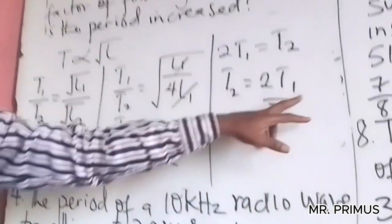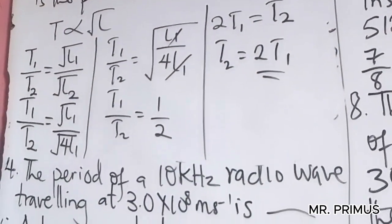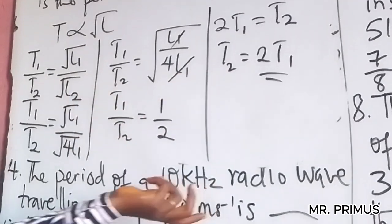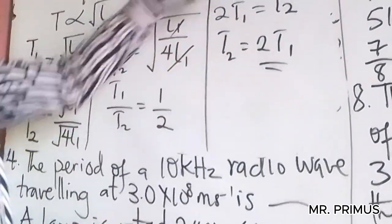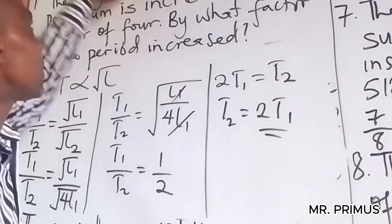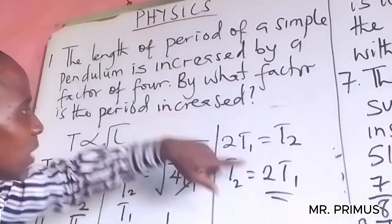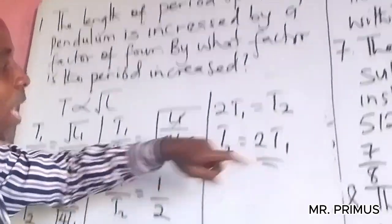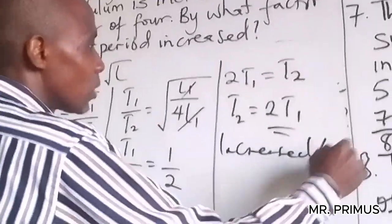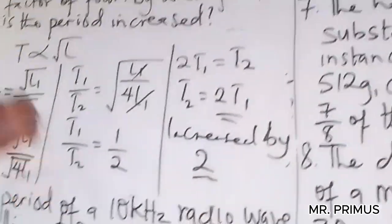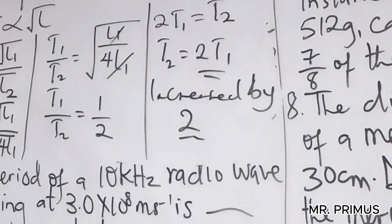So the answer is two — the period is increased by a factor of two. If T1 is 50, then T2 is 2 × 50 = 100. By what factor is the period increased? The answer is two — not four, not eight, not any other option given.